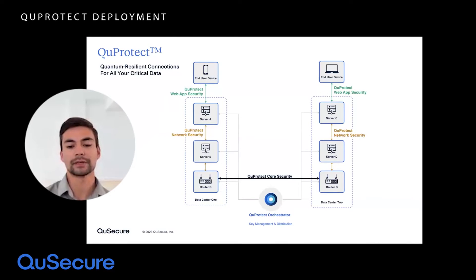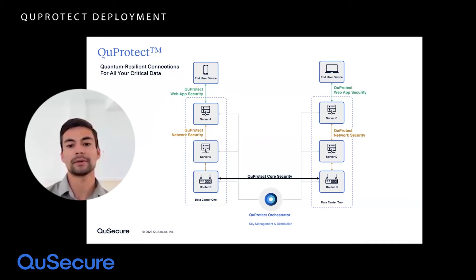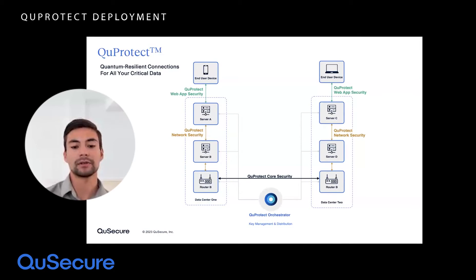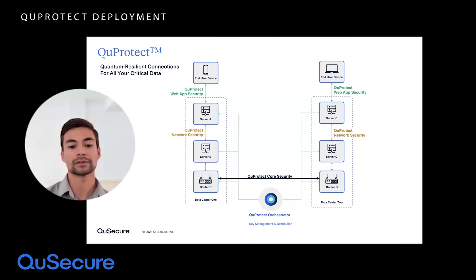Here is a live demonstration of our QProtect platform. As Skip was mentioning, there are three independent products on the QProtect platform. One is QProtect web application security, for web apps and websites. We have QProtect network security for security between applications on different servers, as well as other network traffic. Finally, you can see QProtect core security — security performed in a post-quantum fashion for routers that leverage the Skip protocol from Cisco. You'll hear more about that with Rebecca and Craig at the end of this presentation.